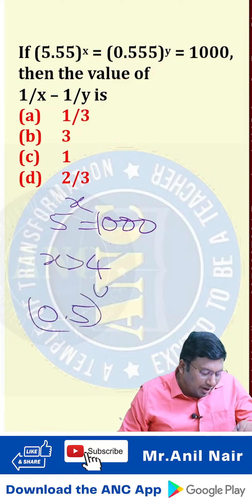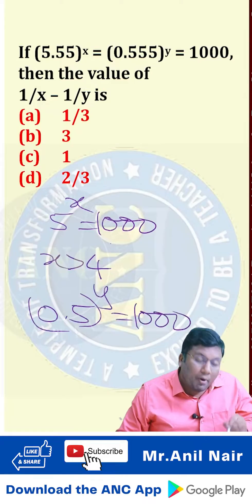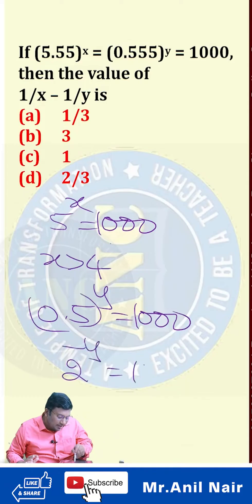0.5 power y is equivalent to 1000. 0.5 is 1 by 2. 2 power minus y is around 1000. y is around minus 10.